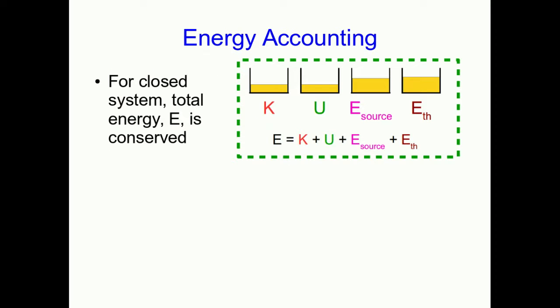Because energy is extensive, we can do the same sort of accounting for it that we do for momentum. And we've seen this in earlier lectures, but now it's worth reviewing it because we have more tools at our disposal. We know all of the kinds of energy that the energy within a system can take: kinetic, potential, source energy, and thermal energy. And of course, potential energy has many types, and source energy has many types. But these four broad categories are the main categories.